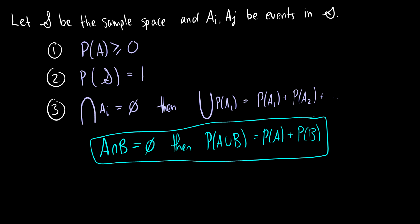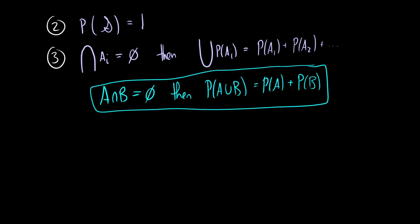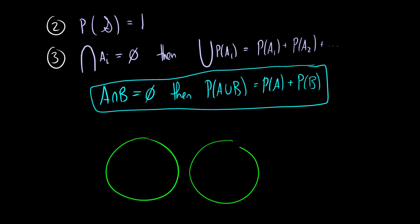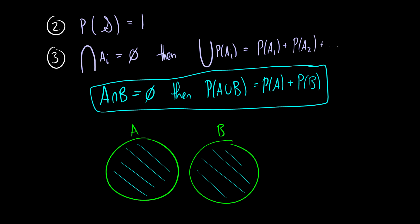I'll draw the intuition for this third axiom. We have A and B and they're disjoint, so there's no overlap. Therefore if we want A or B, there's just the probability of A plus the probability of B. There's no overlap so we don't have to subtract anything.